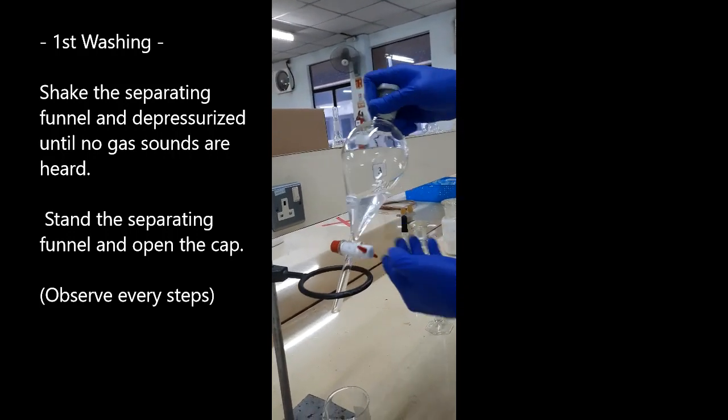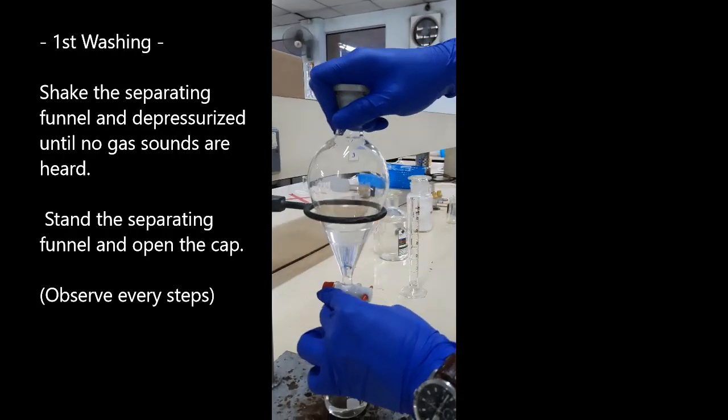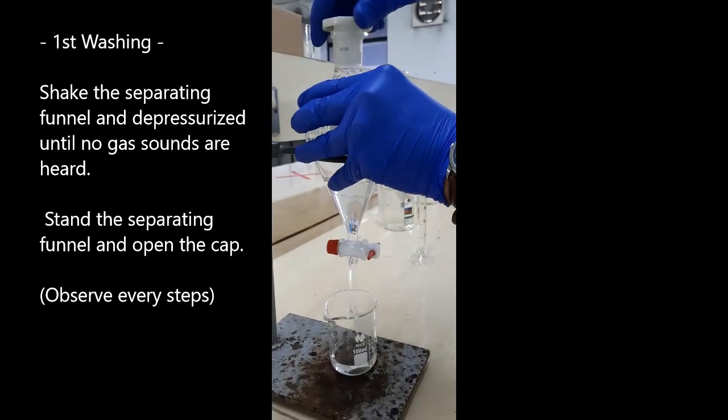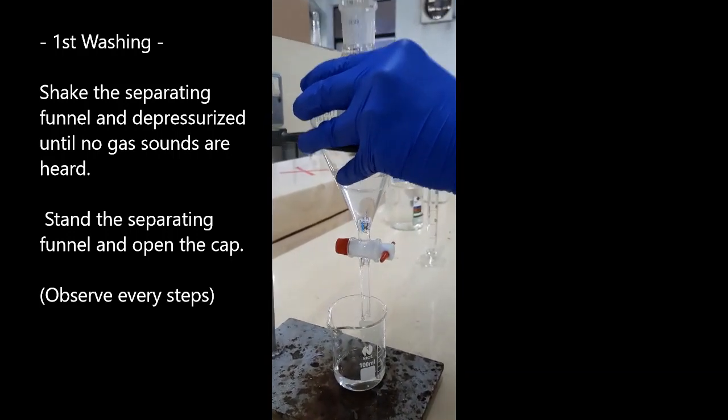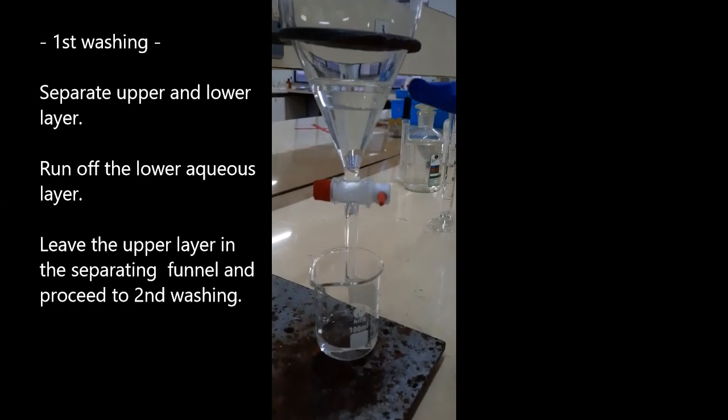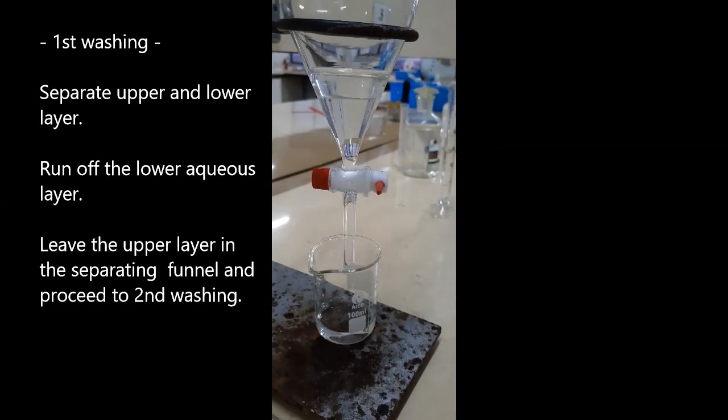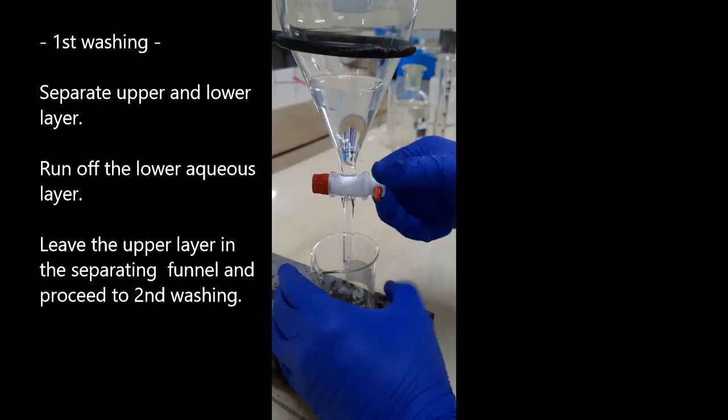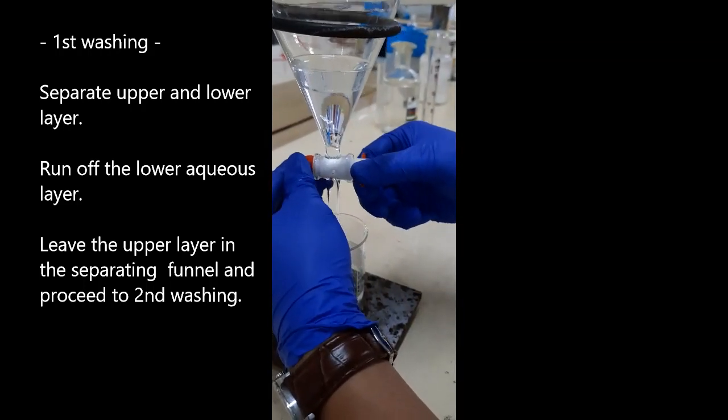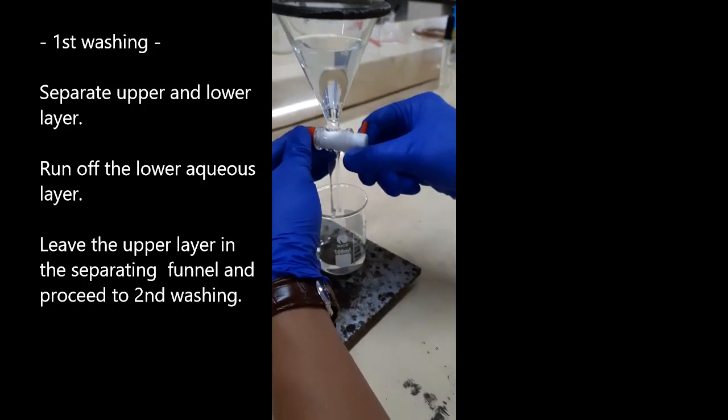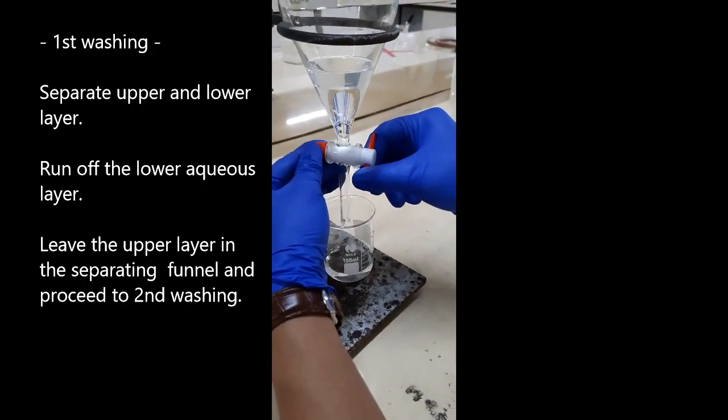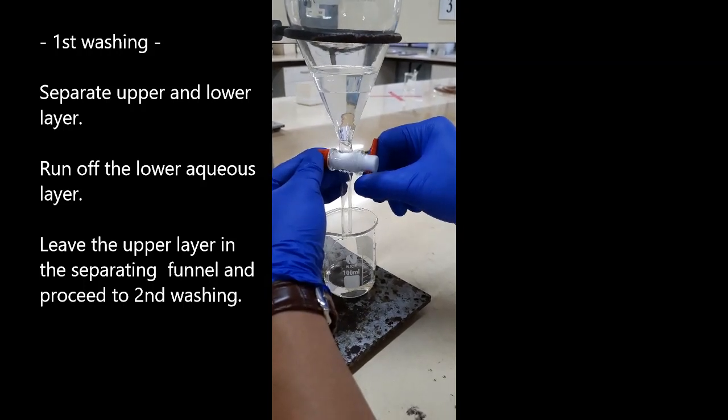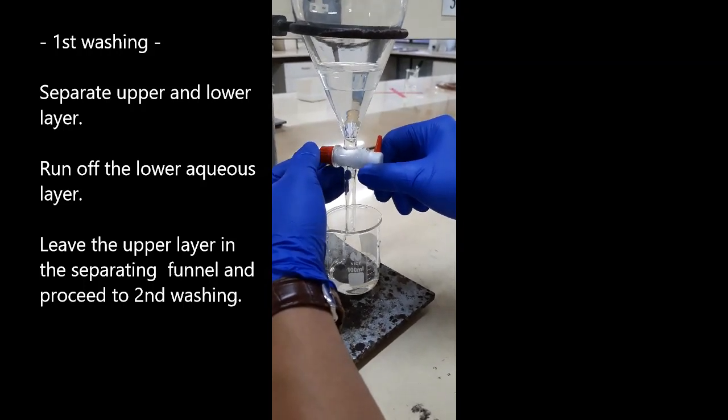Let the separating funnel stand for a while. Before opening the cap, observe the two liquid layers form. Run off the lower aqueous layer. Leave the upper layer in the separating funnel and proceed to the next step.